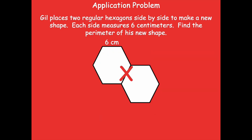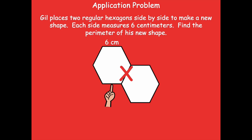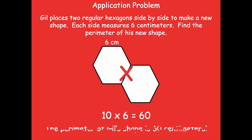Let's count to see what I mean. One, two, three, four, five, six, seven, eight, nine, ten — so we have 10 sides. Now we're doing 10 times 6, which represents our 6 centimeters. And friends, what's 10 times 6? 60. So the perimeter of Gil's shape is 60 centimeters.